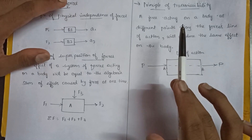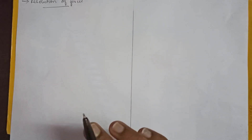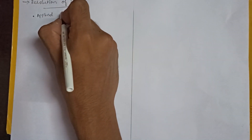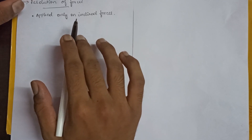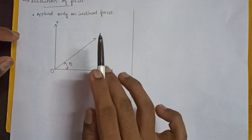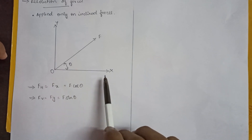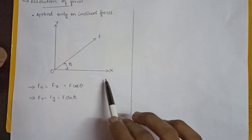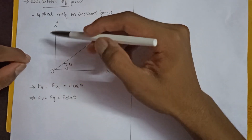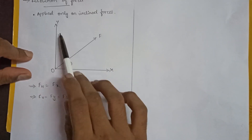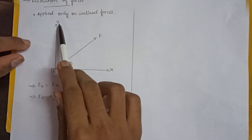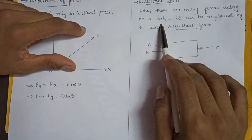Now we come to the final important concept needed to solve the problem: resolution of forces. Resolution is done only on inclined forces, to resolve them into a vertical component and a horizontal component. Consider a force F inclined at angle theta to the x-axis. When you resolve it into the horizontal component, you get Fx = F cos θ. When you resolve it into the vertical component, you get Fy = F sin θ.